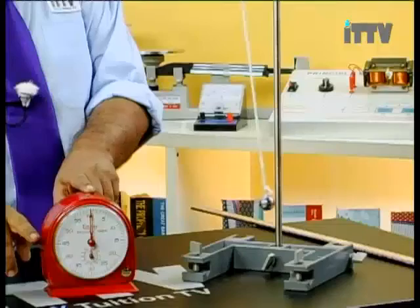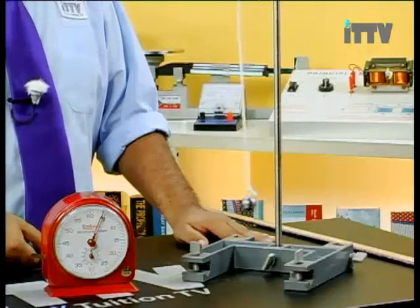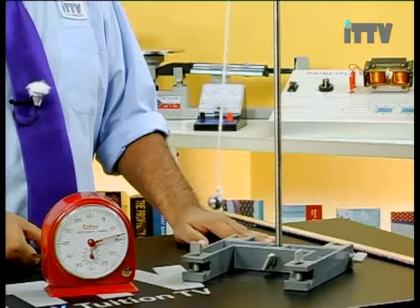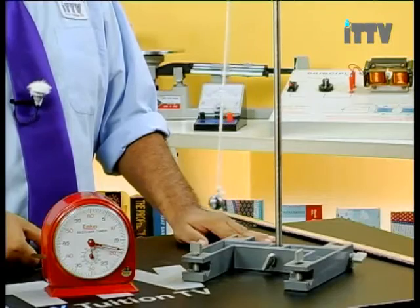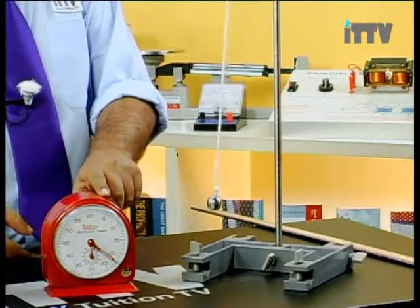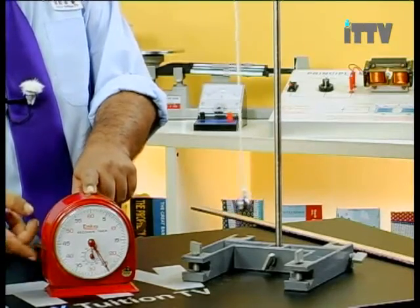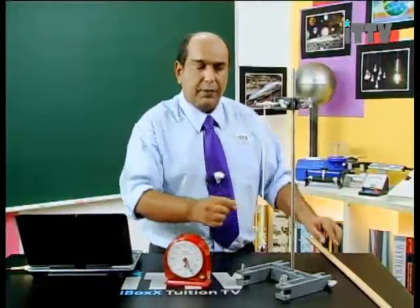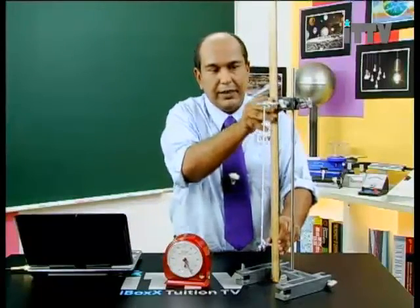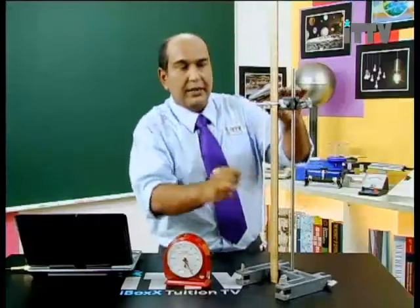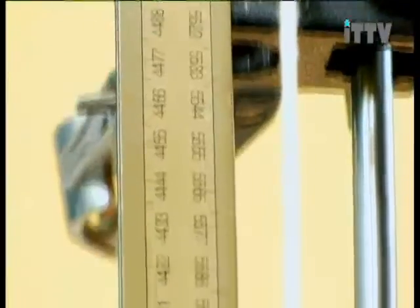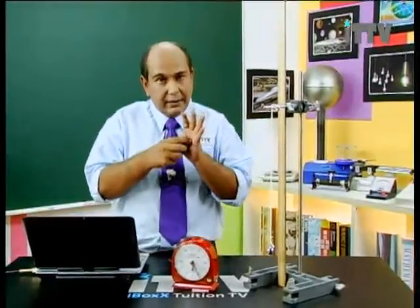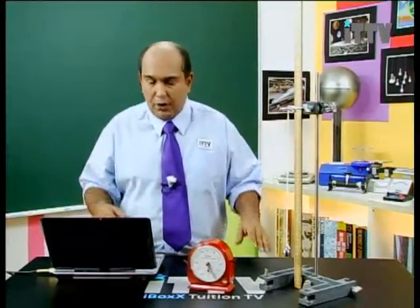The pendulum is released and swings evenly. We count 20 oscillations, then stop the clock and record the time. I take the meter ruler and place it next to the pendulum bob, measuring the length from the middle of the string to the middle of the bob. I have a length of 40 centimeters — those are my first two values: the length and the time.